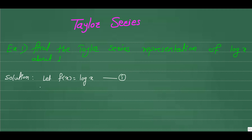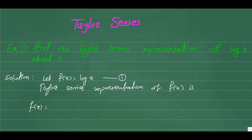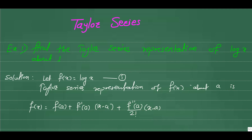We know that the Taylor series representation of f(x) about a is: f(x) = f(a) + f'(a)(x - a) + f''(a)/2! · (x - a)² + f'''(a)/3! · (x - a)³ and so on. Let us call this equation number 2.